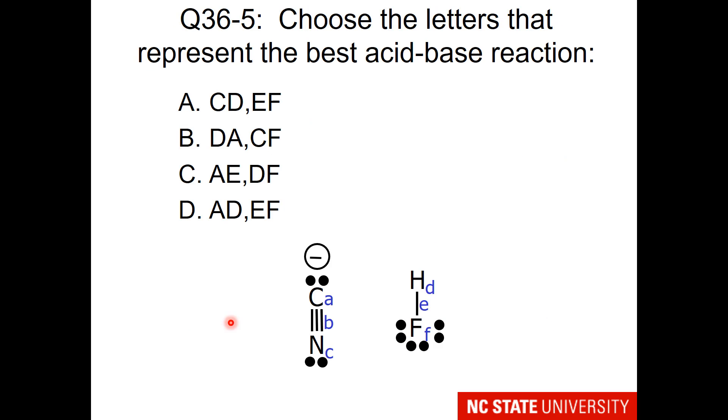Now here's your question. Choose the letters that represent the best acid-base reaction. Since HF is the only one that has a proton, this has to be our acid. But remember for your base, when you reach out and grab the proton, you're making a bond. If you reach out from the carbon, you'll make a bond to hydrogen and you'll have this Lewis structure shown. If you reach out with the nitrogen, you will have this Lewis structure. Which one looks like a more stable Lewis structure to you?